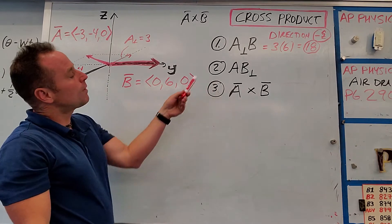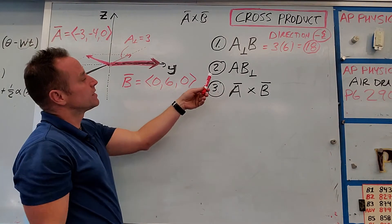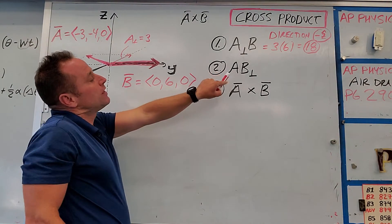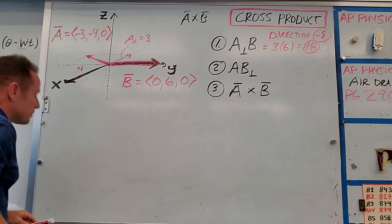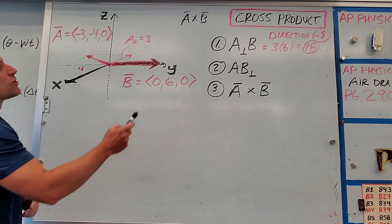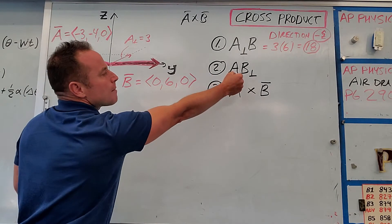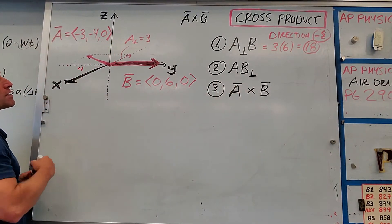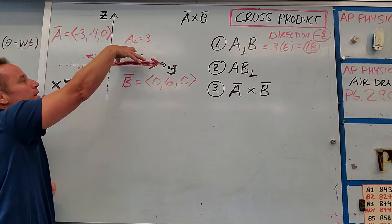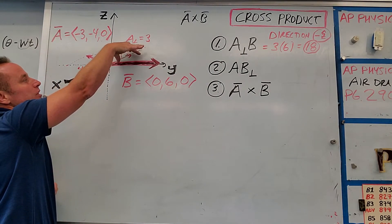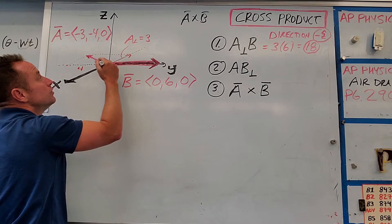Okay, another way to do this, which I would not choose in this case, is another method where you can take A times the part of B that is perpendicular to A. The trouble here is I would not opt for this one, or it wouldn't be my first choice anyway, is what that would be saying is you need to figure out how much of B is actually perpendicular to the A vector.